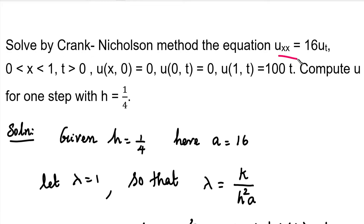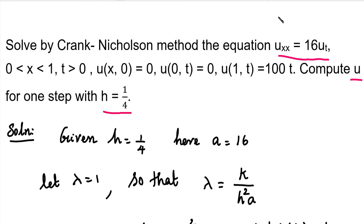The equation is u_xx equal to 16 times u_t, where 0 is less than x less than 1 and t greater than 0. Three conditions are given: u(x, 0) = 0, u(0, t) = 0, and u(1, t) = 100t. Compute the u value for one step with h equal to 1/4.